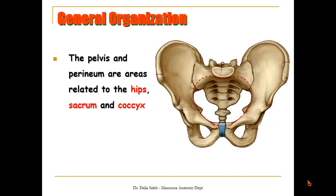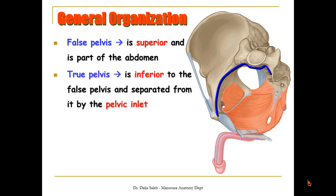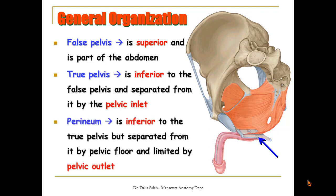The pelvis and perineum are areas related to the hips, the sacrum, and the coccyx. It is divided into false pelvis, which lies superiorly and is actually part of the abdomen. Below the pelvic inlet lies the true pelvis. The most inferior part is the perineum, which lies inferior to the true pelvis, but separated from it by the pelvic floor and limited by the pelvic outlet.